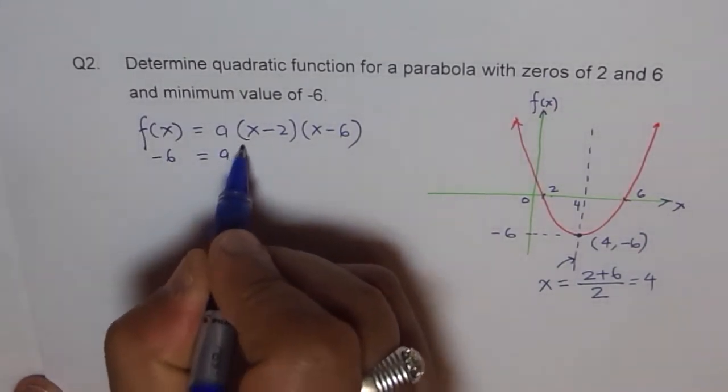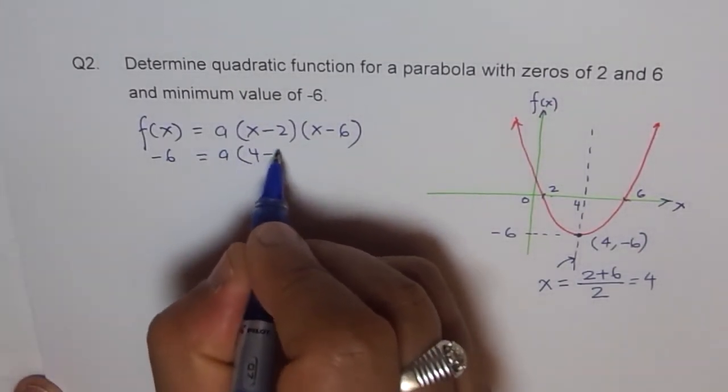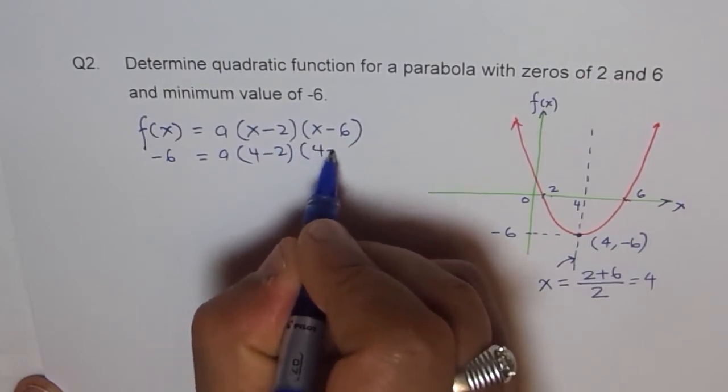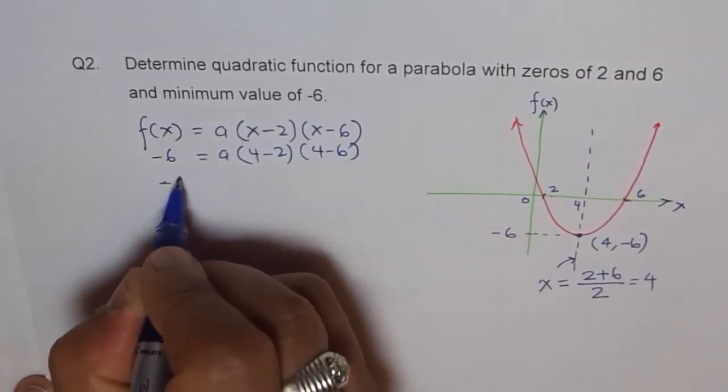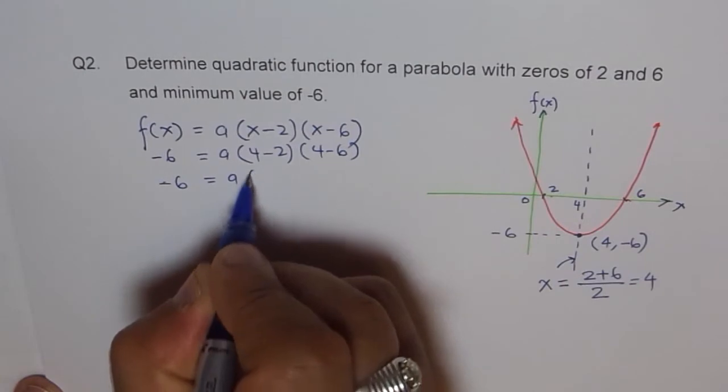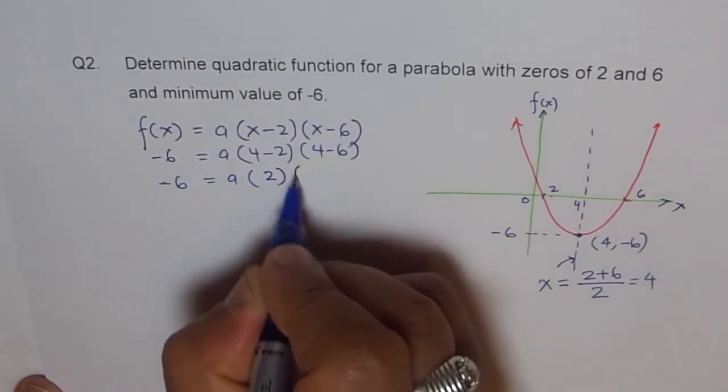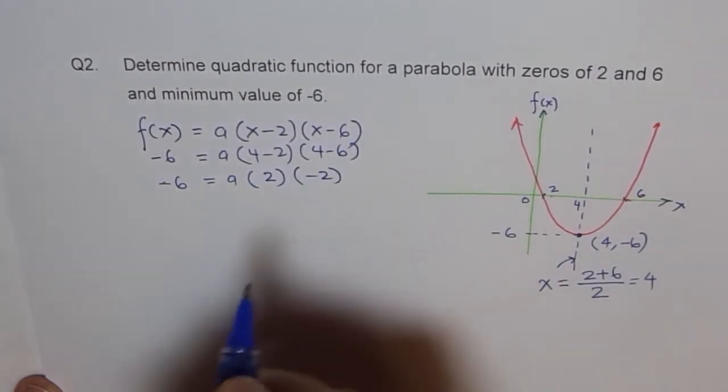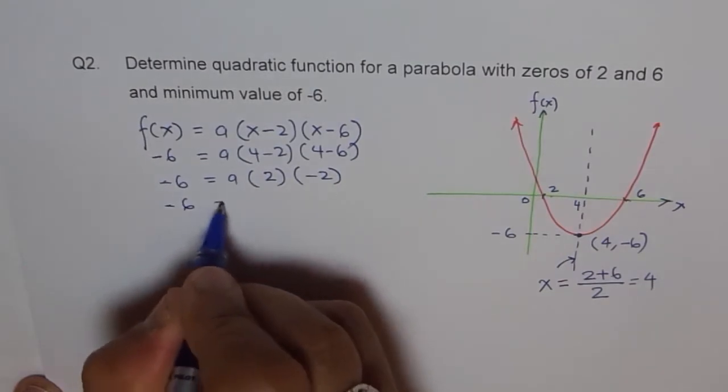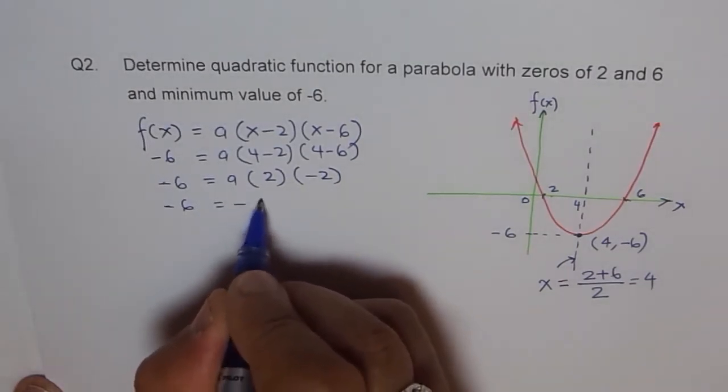So we'll write 4 minus 2 times 4 minus 6. And this is like minus 6 equals a times 4 minus 2 is 2, and 4 minus 6 is minus 2. That gives us minus 6 equals minus 4a.